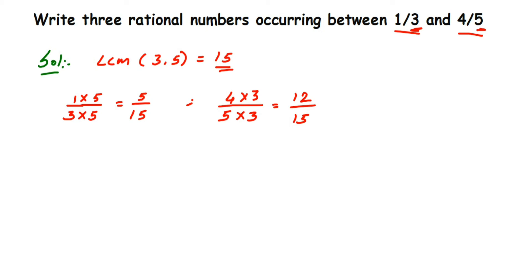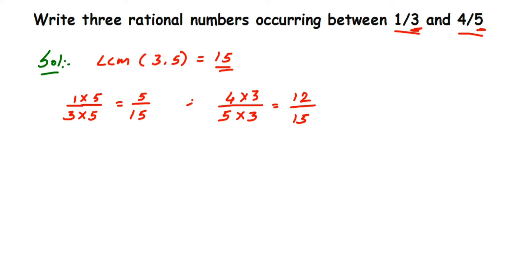Now between five by fifteen and twelve by fifteen, since we only need three rational numbers, we look at the numerators between five and twelve: six, seven, eight, nine, ten, eleven. We just pick any three of these. So let's randomly pick three rational numbers between five by fifteen and twelve by fifteen.